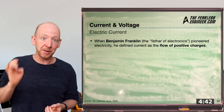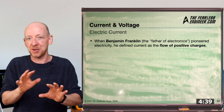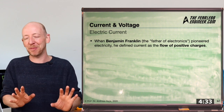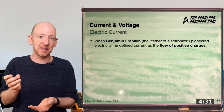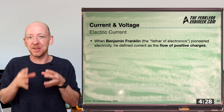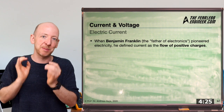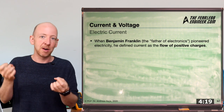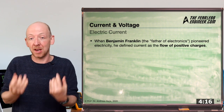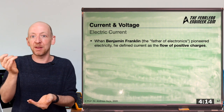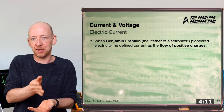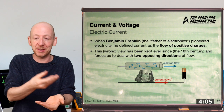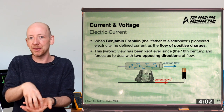Before we move on to voltage, we need to discuss the direction of flow, because this traditionally leads to some confusion. The reason goes more than 300 years into the past, when the famous scientist Benjamin Franklin pioneered electricity and conducted groundbreaking experiments. When he described the flow of charges, he was not aware of electrons, protons, or the elementary charge, because they had not been discovered yet. This is why he defined the flow of current as the movement of positive charges — not negative — and the entire foundation of electrical engineering was built on these false assumptions.